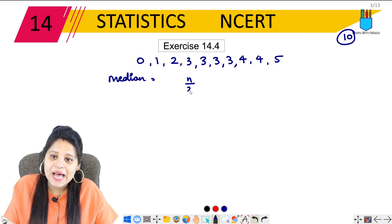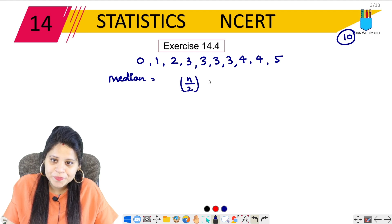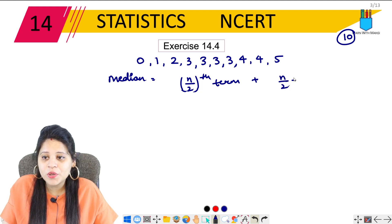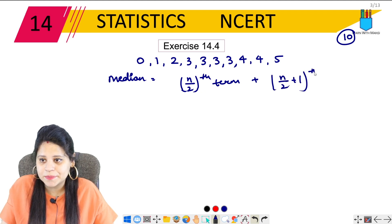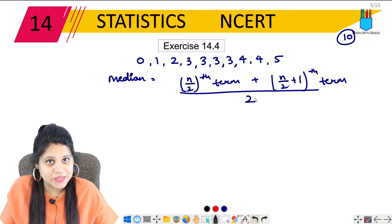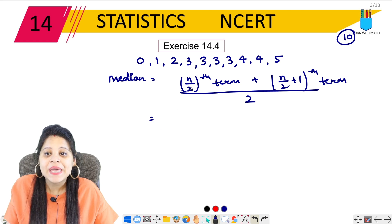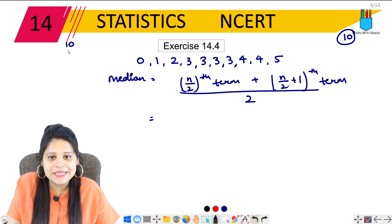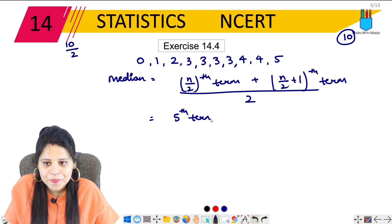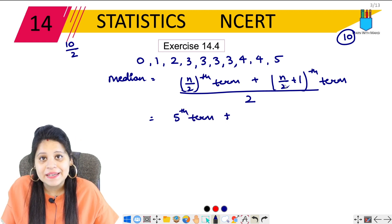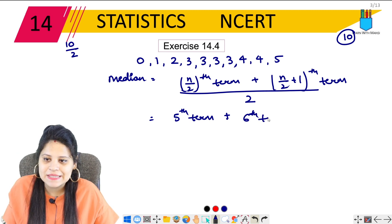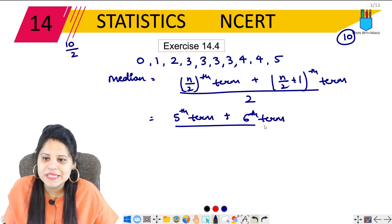That means n upon 2 term plus n upon 2 plus 1th term. So 10 upon 2 is 5. So 10 upon 2 is 5, that means 5th term plus again. Now n upon 2, 10 upon 2, 5. 5 plus 1, 6th term.